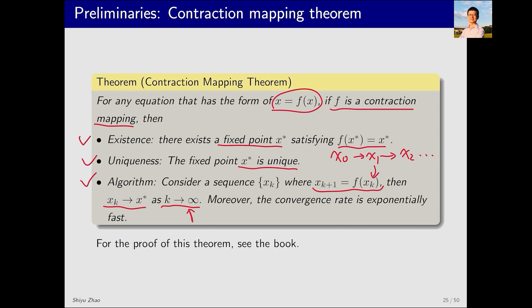Of course, in practice, we don't need to let k reach infinity. After running a finite number of steps, we can obtain a result that is satisfactorily accurate. Moreover, the convergence rate towards x star is exponentially fast. For the proof of the contraction mapping theorem, we won't discuss it here. There's a very detailed proof in my book. If you're interested, you can see the book.